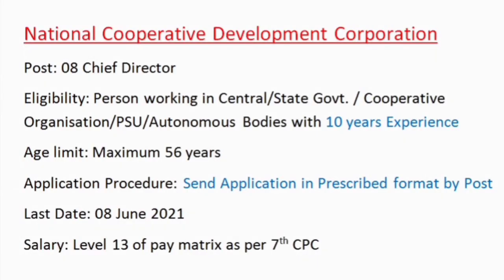Chief Director Post Vacancy in National Cooperative Development Corporation. Eligibility: Person working in Central or State Government, Cooperative Organization, PSU, or Autonomous Bodies with 10 years experience. Age limit: maximum 56 years. Application procedure: offline. Send application in prescribed format by post before 8 June 2021. Salary: Level 13 of Pay Matrix, 7th CPC.